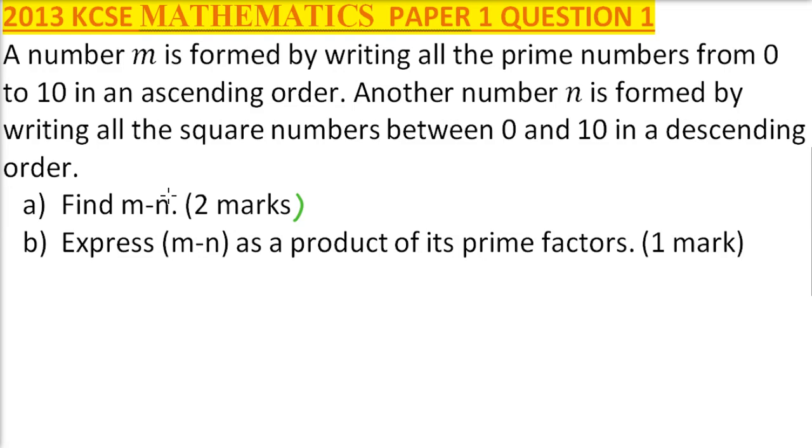So to do that, first of all we start with m. Our number m is, we are supposed to write the prime numbers in ascending order. So we have 2, then we have 3, we have 5, and finally we have 7.